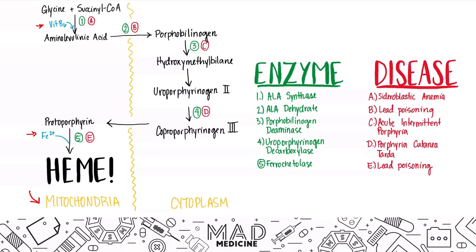Heme synthesis starts in the mitochondria with glycine and succinyl-CoA. Both of these molecules are combined along with vitamin B6 — that's why you need vitamin B6 for heme production. The enzyme ALA synthase combines glycine and succinyl-CoA to produce aminolevulinic acid, aka ALA. So to synthesize ALA, you use ALA synthase — pretty straightforward.